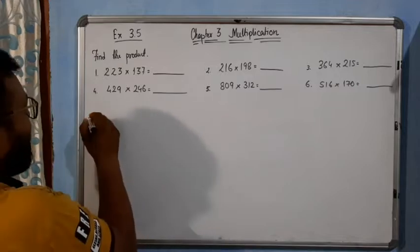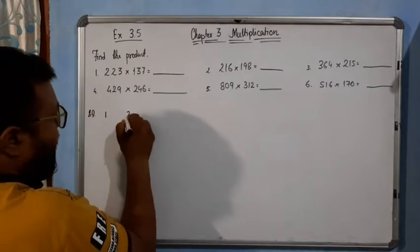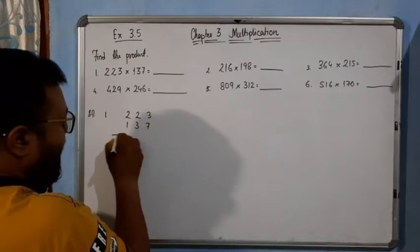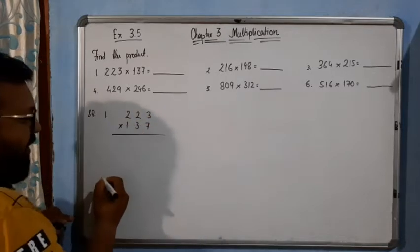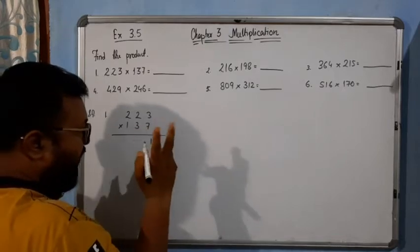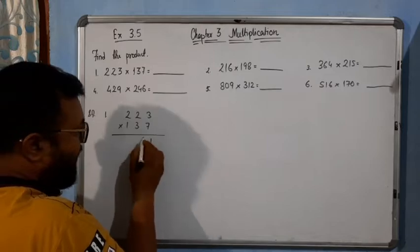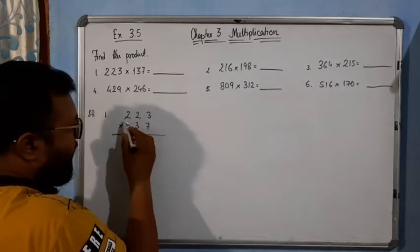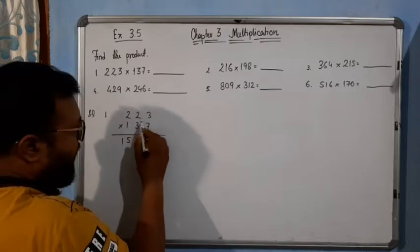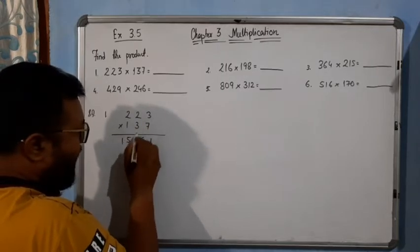Question number 1, solution 1 here. 223 multiplied by 137. It's very simple multiplication. 7 times 3 is 21, carry 2. 7 times 2 is 14, 15, 16. Write 6, carry 1. 7 times 2 is 14 plus 1 is 15.